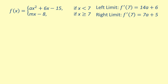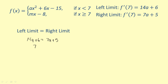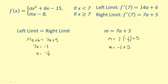To complete the example we need to find a and m. We set the left and right limits of the derivative equal to each other and solve for a. The left limit 14a plus 6 is equal to the right limit 7a plus 5. Isolating the a term on the left side gives 7a equals negative 1. Dividing both sides by 7, we find that a equals negative 1 seventh. Now we use the equation m equals 7a plus 5. Substituting negative 1 seventh for a gives m equals 7 times negative 1 seventh plus 5, which simplifies to m equals negative 1 plus 5, so m equals 4.